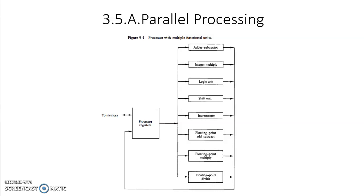Parallel processing can be seen at various levels of complexity. At the lowest level, you can look at shift registers. There are different types of shift registers: serial input serial output, or parallel input parallel output. In a serial input serial output shift register, one bit at a time will be coming out of the register. Whereas in the parallel input parallel output register with parallel load, multiple bits can be sent at a time depending upon the number of bits stored in the register.